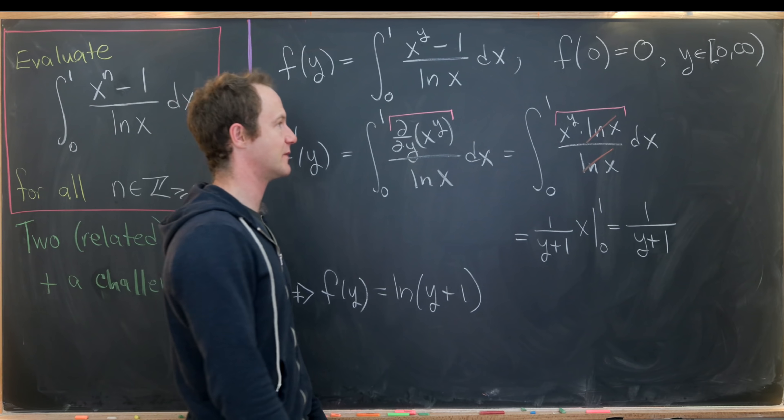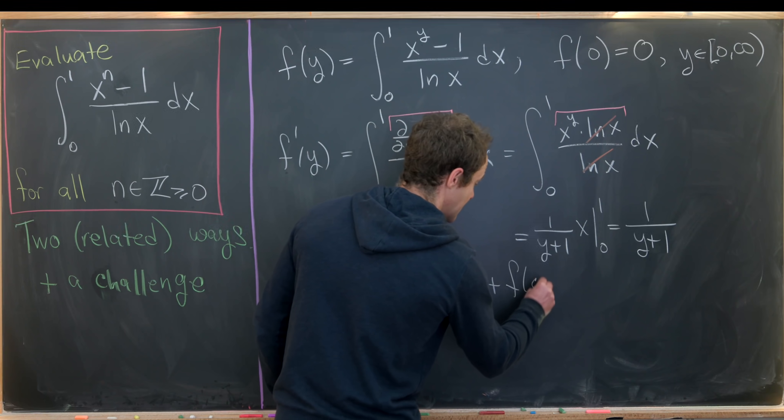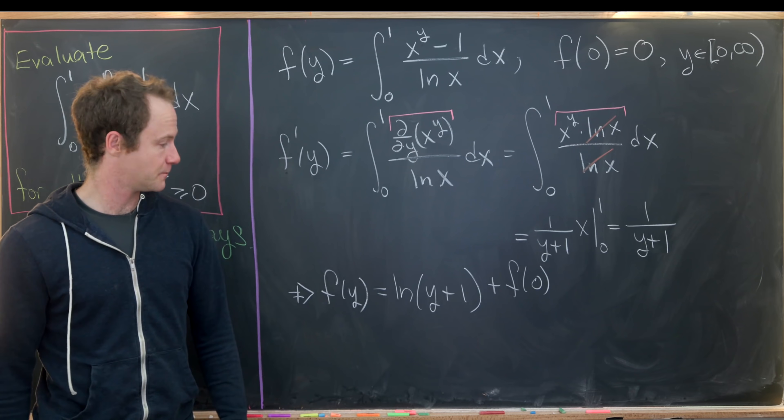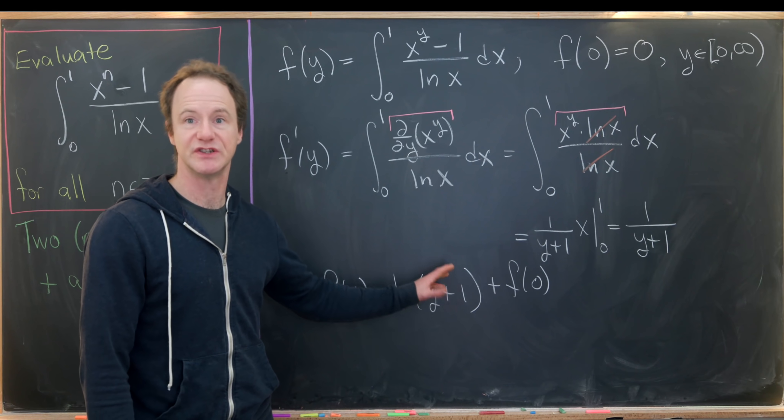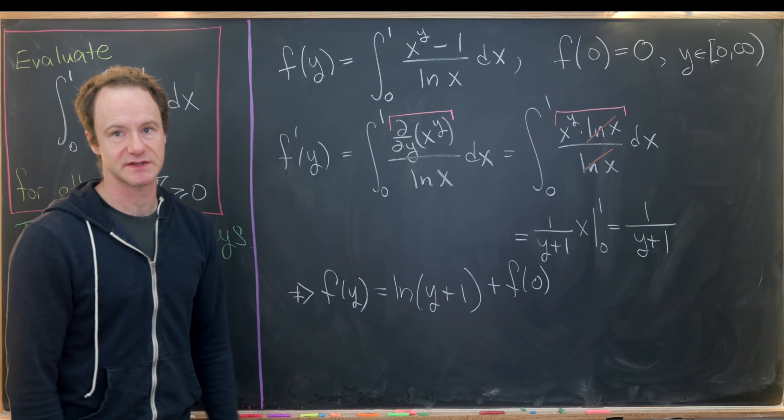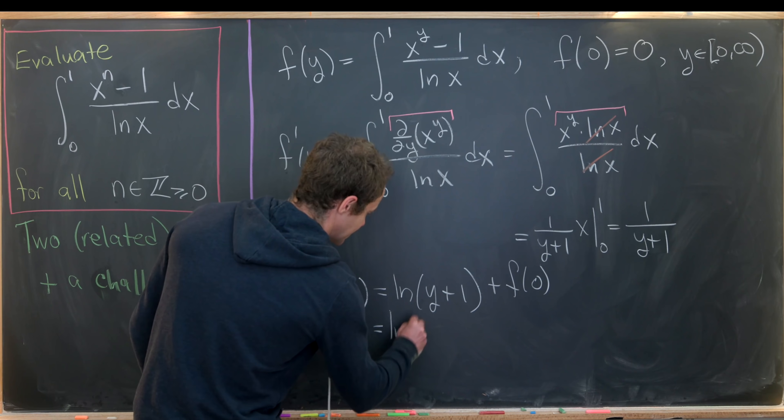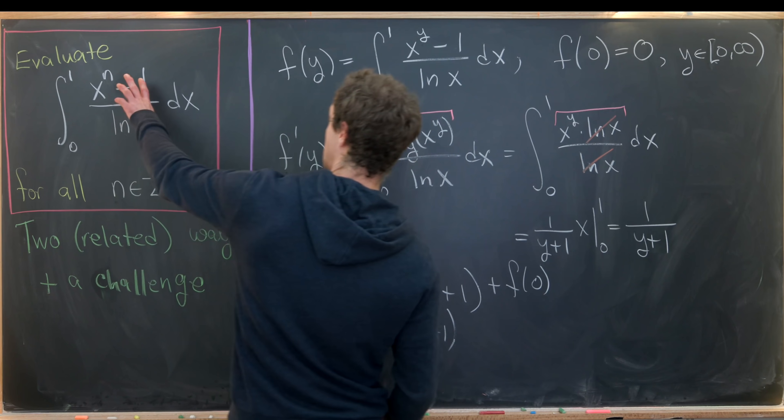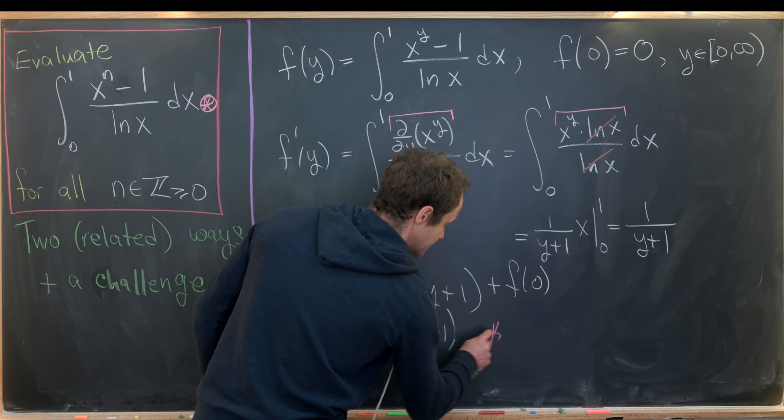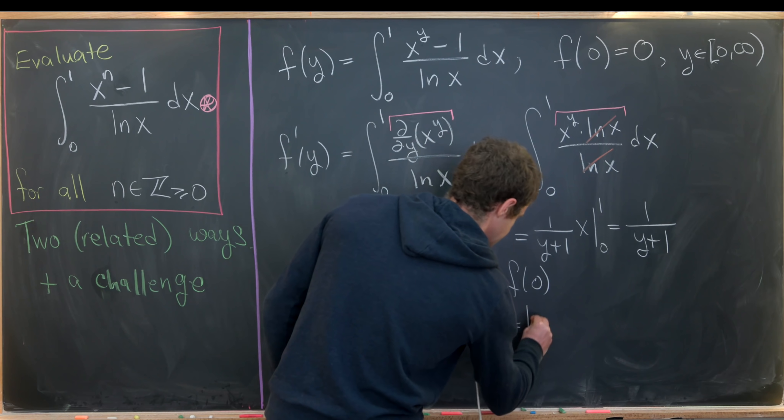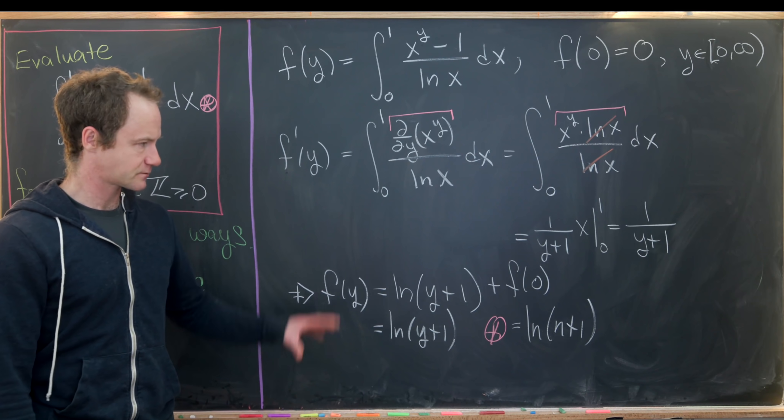So where are we? We've got f of y is natural log of y plus 1. We need to add a constant. But notice that constant will be the value of f at 0. And that's because if we plug y equals 0 into this, we'll get the natural log of 1, which is 0. So that's the constant that we're missing. But that constant was equal to 0, meaning that f of y was equal to the natural log of y plus 1, meaning our integral over here. So maybe I'll just call this star. So I'll put pink star. So this pink star is in fact equal to the natural log of n plus 1, where n is being restricted to these integers.